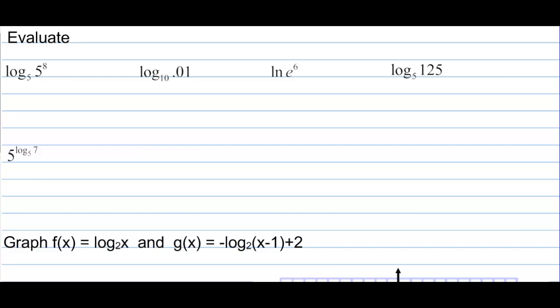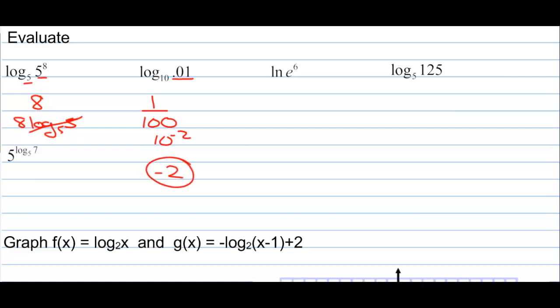Evaluate: log base 5 of 5 to the 8th — if the base of the log and the base of the exponent are the same, they cancel out. You could also bring the 8 down in front, and log base 5 of 5 equals 1, so either way the answer is 8. Log of one one-hundredth: that's 10 to the negative 2, so this evaluates to negative 2. The natural log of e to the 6th is 6. Log base 5 of 125: 5 to the 3rd is 125, so that's 3. And 5 to the log base 5 of 7 — both bases are 5, those cancel out, giving 7.